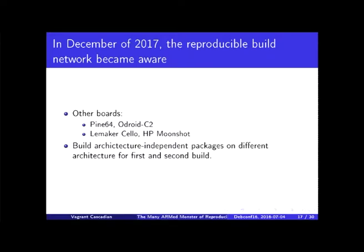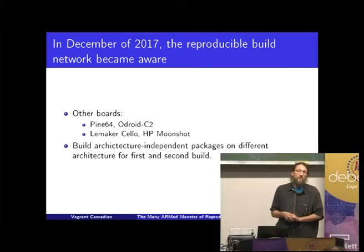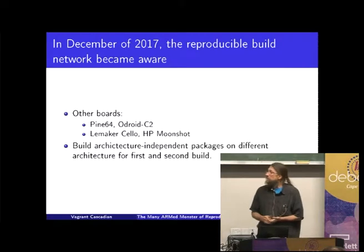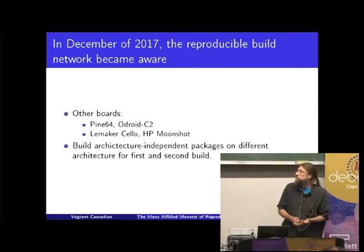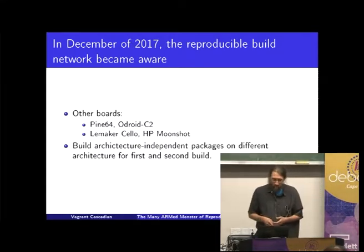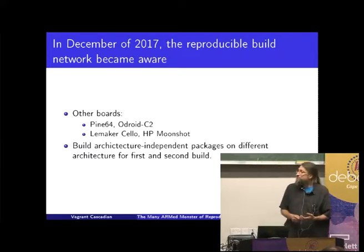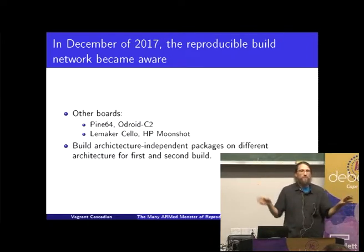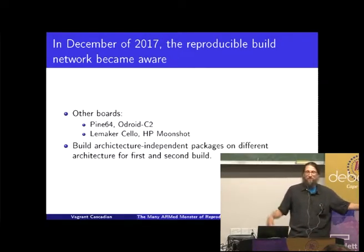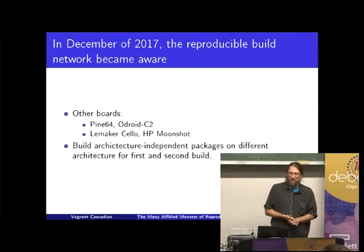We're looking at some other boards in the future. I've got a few Pine64 boards waiting at home, and there's been really great progress on mainline support for both uBoot and the kernel. I don't know how Odroid C2 is coming, but I'll spend some time on it. We might get access to some Lemaker Cello, or even some HP Moonshot hardware, which would be pretty exciting. And one thing I'd really like to try is building architecture-independent packages on two different architectures — build ArchAll on ARMHF and then again on AMD64. Do they come out the same?